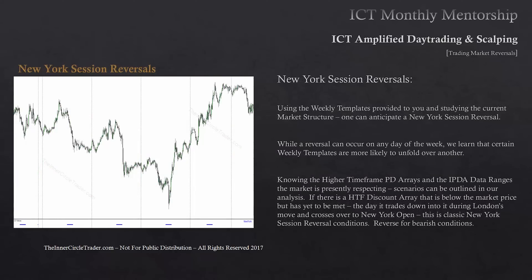For New York session reversals, remind yourself that the weekly templates from earlier teachings provide the basis for studying current market structure and anticipating what the New York session will do in terms of continuation or reversal. While a reversal can occur on any day of the week, certain weekly templates are more likely to unfold than others. When price trades down into a discount array on a higher timeframe chart at the time New York opens, that is when the most likely chance of a market reversal in the New York session will be seen. Unless New York opens at a premium or discount array on a higher timeframe, New York will always be expected to continue what was seen in London.